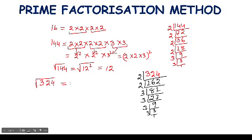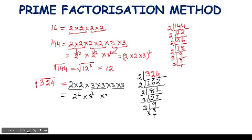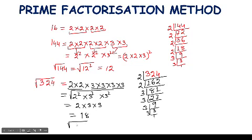The prime factors of 324 are: two multiplied two times and three multiplied four times. We make pairs: two squared times three squared times three squared. Taking one from each pair gives two times three times three, which equals eighteen. So the square root of three hundred twenty-four equals eighteen. This is the prime factorization method.